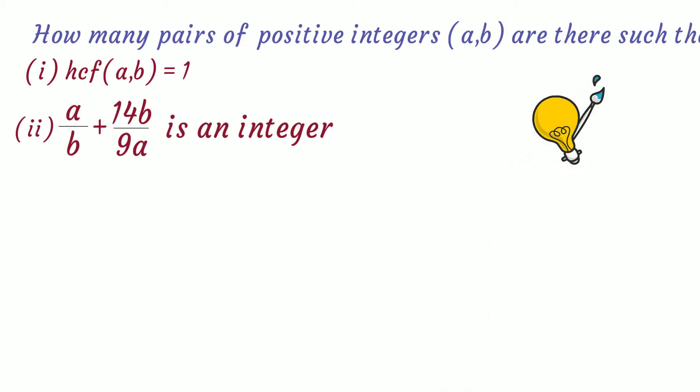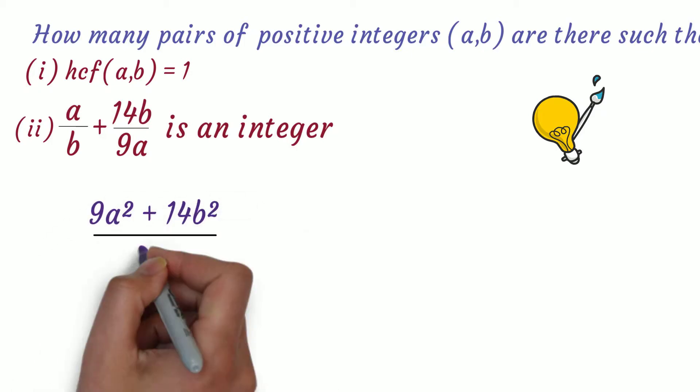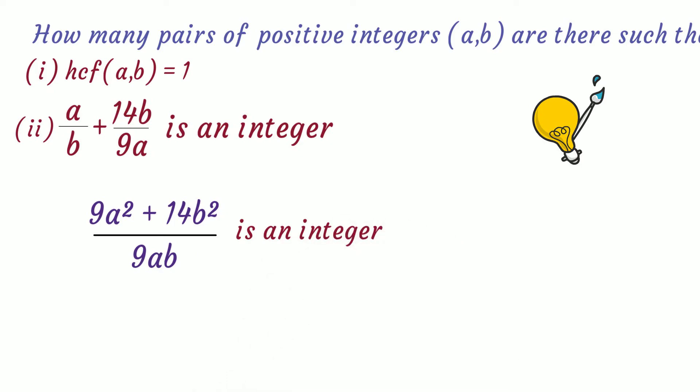First, let's add the given expression taking a common denominator. We get (9a² + 14b²)/(9ab) is an integer.